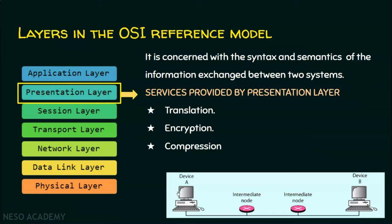Encryption means: suppose this sender is sending confidential information and we don't want others to see or know what communication is being carried out. We want to protect the data from disclosure or unauthorized access. Instead of sending the confidential information as plain text, we convert it into some unreadable text — if somebody intercepts it, they can't understand anything. Only the sender and receiver can understand what the message is. Converting the original message into that unreadable message is called encryption. The sender does encryption and sends the data, and the receiver does decryption to understand the message.